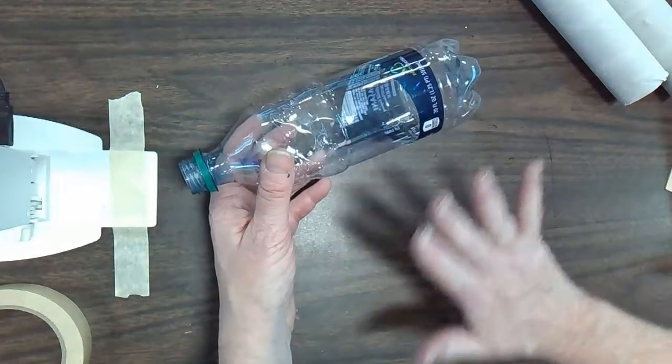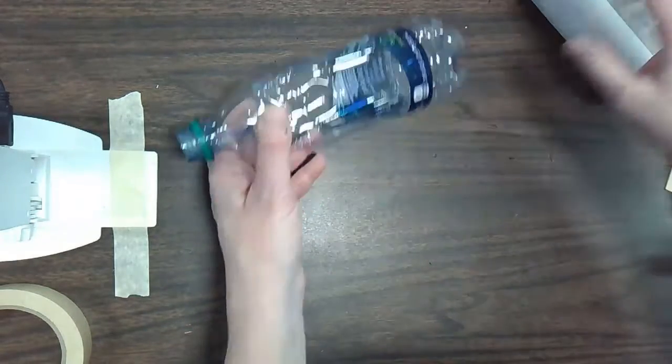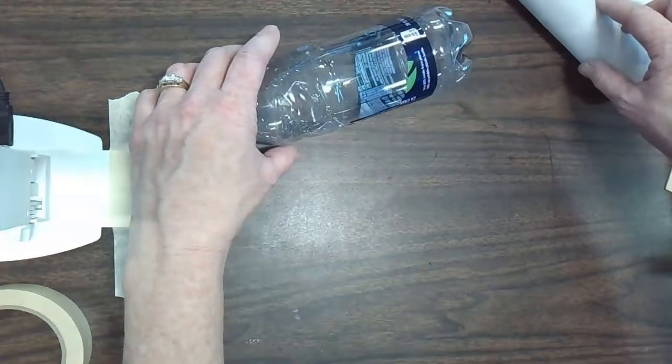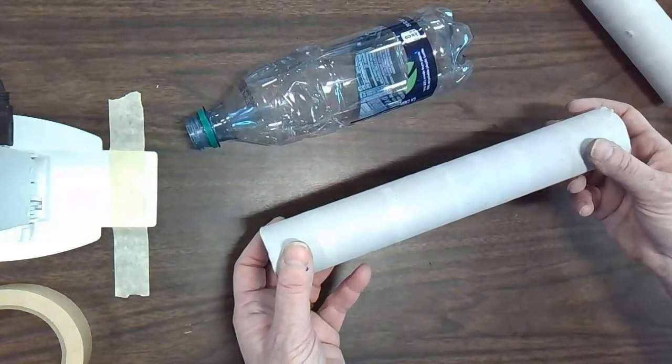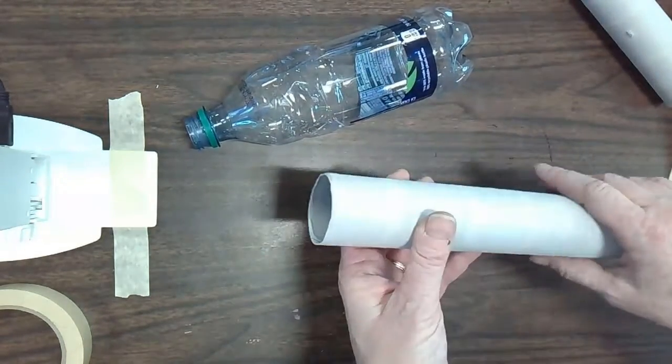You're going to start with your water bottle and think about which angle you want it, what end you want to be the front and the back. And one way to add legs is to use paper towel rolls or toilet paper rolls.